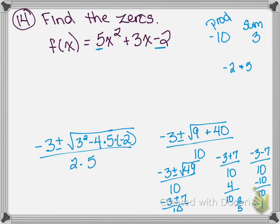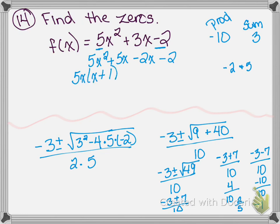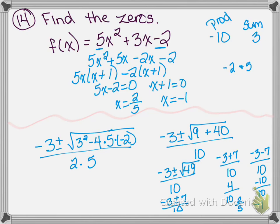Be prepared on your final to do at least one problem with the quadratic formula. But back to this one — because you can factor it, my numbers are negative 2 and positive 5. So I have 5x squared plus 5x minus 2x minus 2. I take 5x out of the first two, left with x plus 1. I take negative 2 out of the second two, giving x plus 1. So 5x minus 2 equals 0 and x plus 1 equals 0, meaning x equals 2/5 or x equals negative 1.